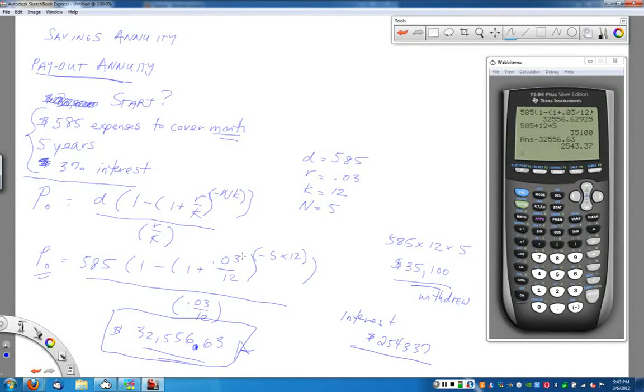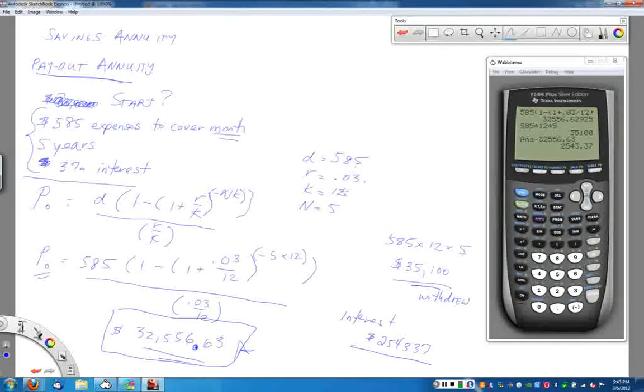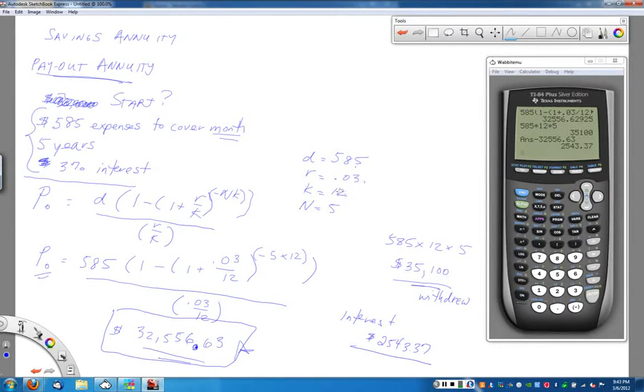And so this payout annuity formula will actually take care of that process for you. Again, the key things to keep in mind with the formula: this is the amount of regular withdrawal, percentage rate written as a decimal, compounding periods, monthly is 12, quarterly is 4, annually is 1, capital N is how many years, make sure that's in years, and then just be super careful in how you use your parentheses for your implementation process. And if you do that, you should be all set. Give it a whirl, try those next couple problems on your homework.